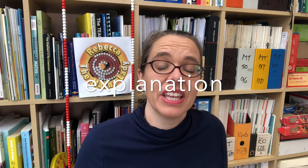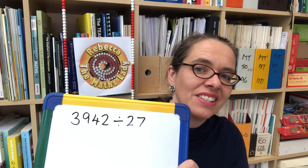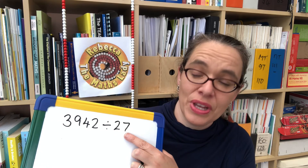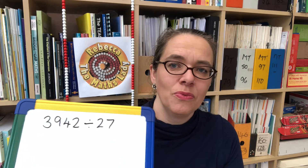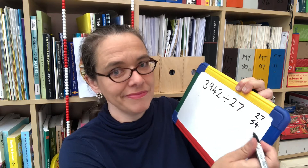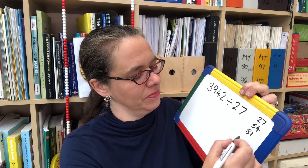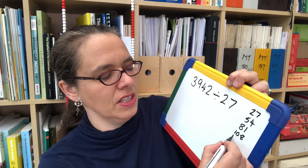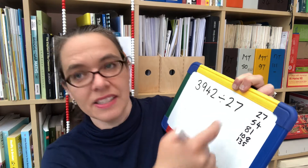Let's get started by looking at how we complete division by two-digit numbers using short division. I'm going to look at this example: 3942 divided by 27. With all the division we've been doing so far we have known the table results for the number we're dividing by. Obviously once we get above 12 we're not going to know them, so with all methods of division by two-digit numbers the first thing you want to do is write out the tables up to 10 times that number. So we start with 27, then 54, then 81, 108, 135, and we know the last result is going to be 270.